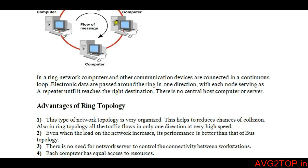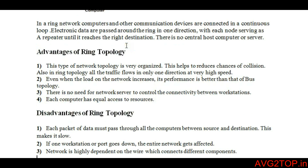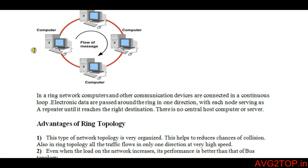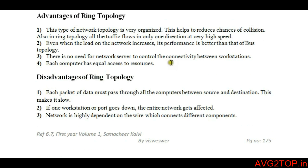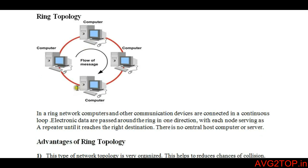The disadvantage is that if there are any issues within the network or with the cables connected to the network, we will not be able to receive the data at the receiver's end. Because of the looping concept, data cannot be sent, and the entire network is affected.